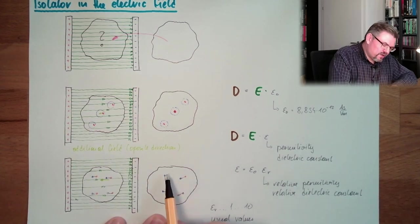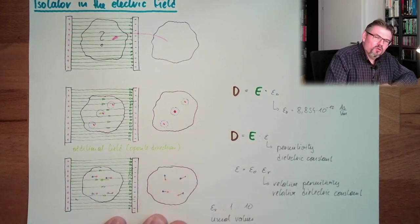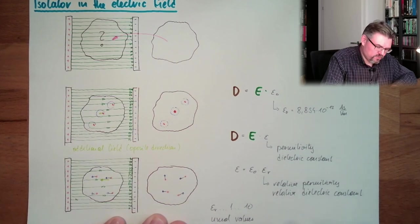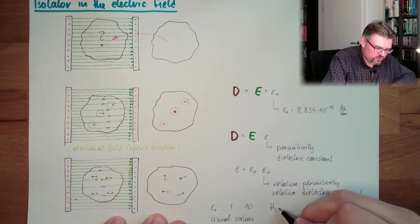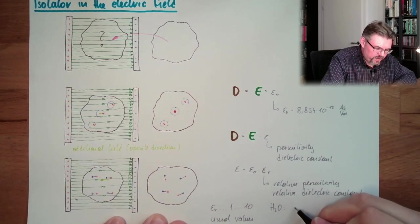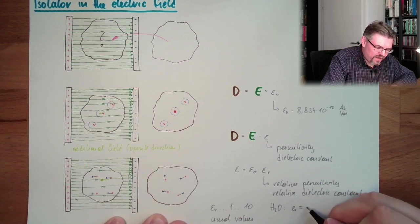And I said water, water is a typical example. It's working very good. Water, H2O, epsilon r is around 80.